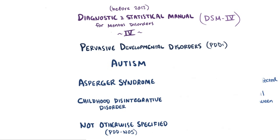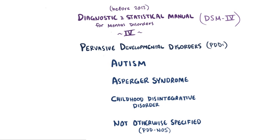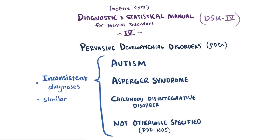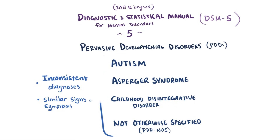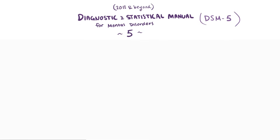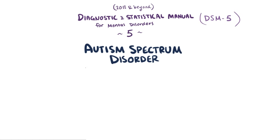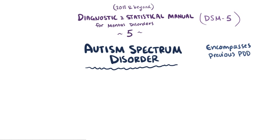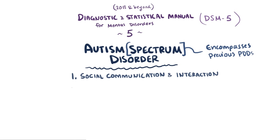Researchers found, however, that separate diagnoses of these pervasive developmental disorders weren't consistent across different clinics, since they tend to have very similar signs and symptoms. As of 2013, the DSM-V, a new revised edition, removed these terms and replaced them with Autism Spectrum Disorder, or ASD, which encompasses all of the previous pervasive developmental disorders, but uses a scale, or a spectrum, that differentiates based on the severity of two major areas: social communication and interaction deficits, and restrictive or repetitive behavior, interests, and activities.